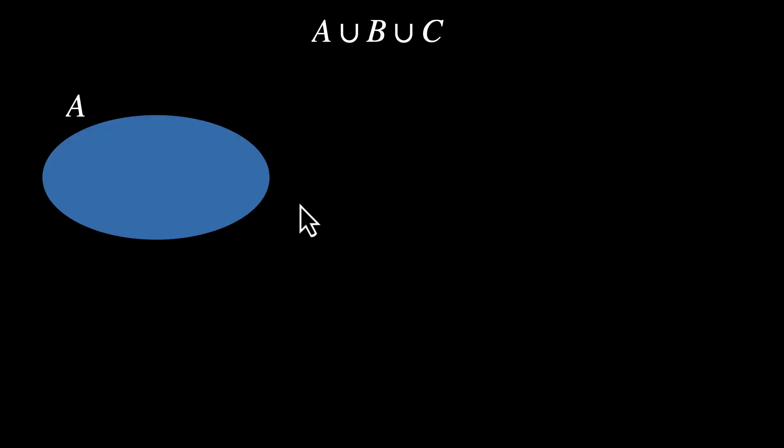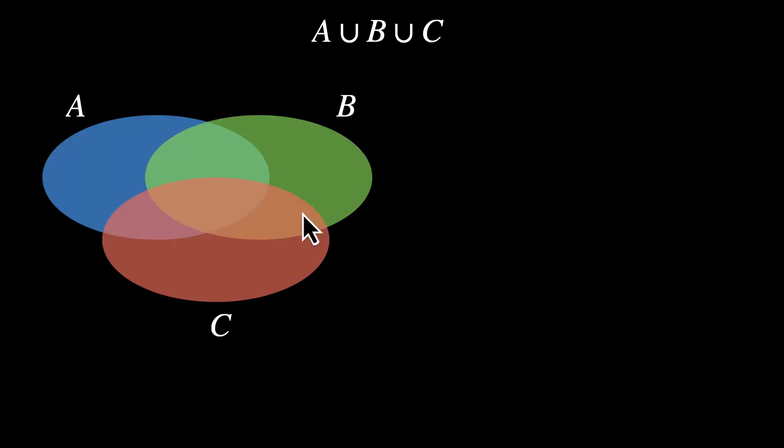Let's use a Venn diagram for this. Let's plot these three events A, B and C. Now we can see a lot of regions here. A union B union C is basically all the area that's covered by these three sets combined.